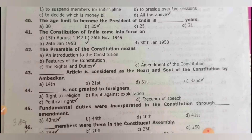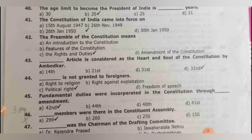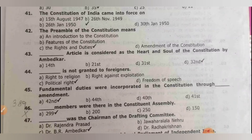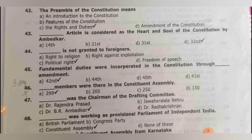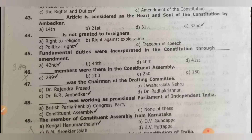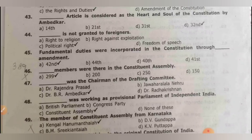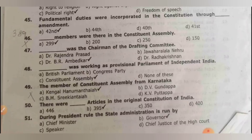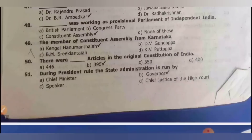The age limit to become president of India is 35 years. The Constitution of India came into force on 26th January 1950. The preamble of the constitution is the introduction. Article 32 is considered the heart and soul of the constitution. Political rights are not granted to foreigners. Fundamental duties were incorporated through the 42nd amendment. There are 389 members in the constituent assembly. The chairman of the drafting committee was Ambedkar. The constituent assembly worked as the provisional parliament of independent India.